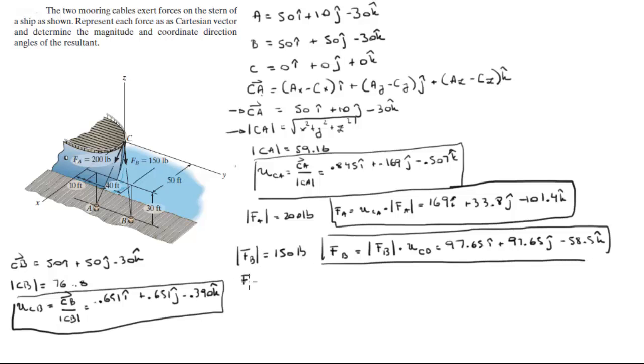The resultant is F of A plus F of B, which comes out to be 266.65i plus 131.45j minus 159.9k. This is the resultant force in Cartesian vector form. The magnitude can be found with this same formula—the three values squared and square rooted—and the magnitude comes out to be 337.6.